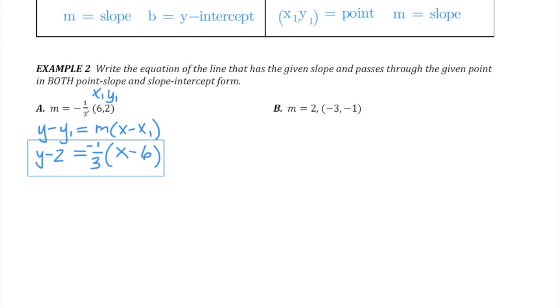Now to get the slope-intercept form from here, we don't have to start all over again. Just notice that the slope-intercept form is written so that y is alone. So if I can do some basic algebra, I can solve for y in this particular equation, and then it will be in slope-intercept form.